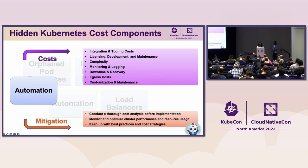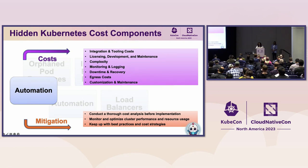To mitigate automation costs, start by conducting a thorough cost analysis before implementing your Kubernetes customization. Also, keep up with best practices and cost strategies specific to your deployment environment.